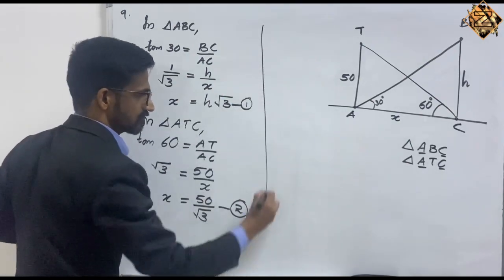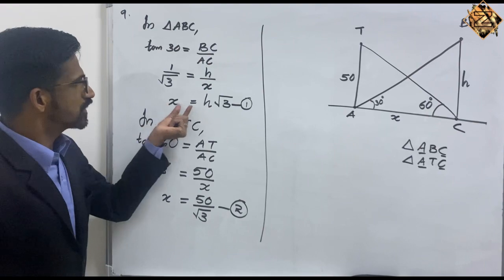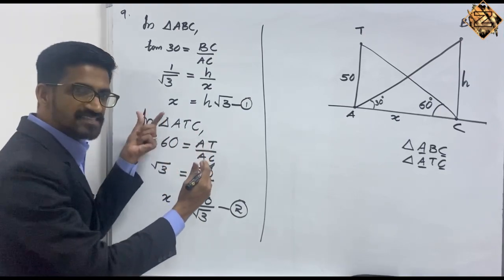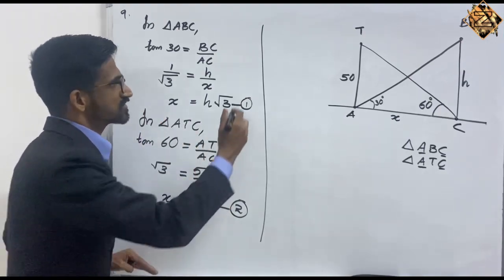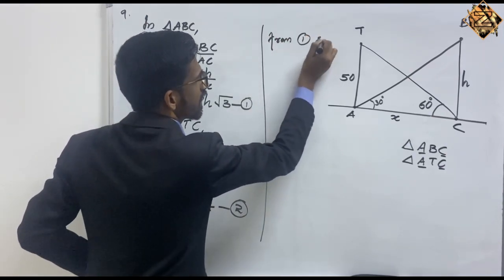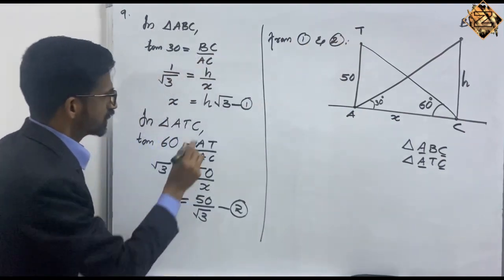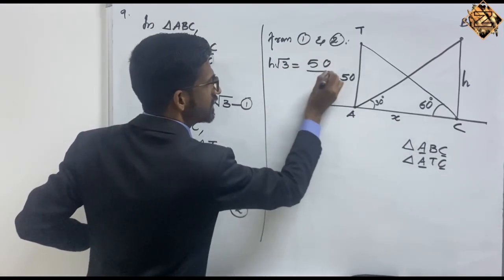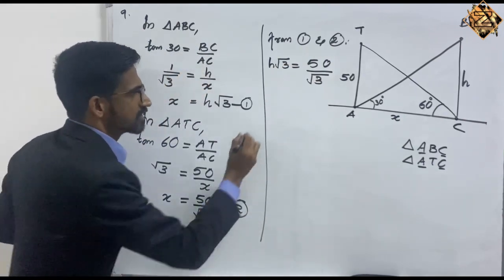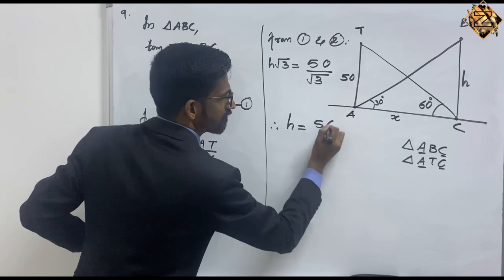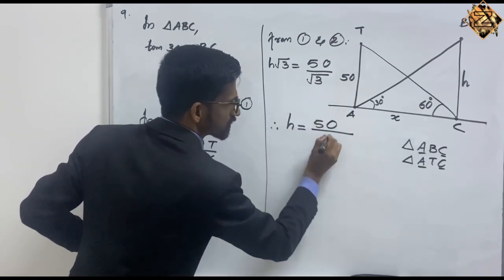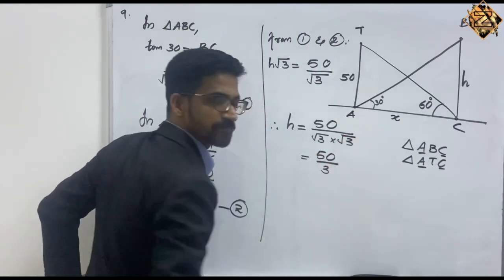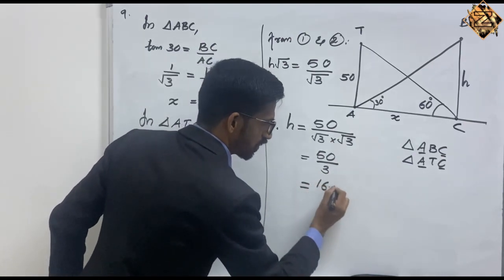We have two equations: equation 1, X equals H root 3, and equation 2, X equals 50 by root 3. Both equations have the same LHS, X, so we equate the RHS. From equations 1 and 2: H root 3 equals 50 by root 3. Therefore, H equals 50 by root 3 into root 3, which gives H equals 50 by 3, that is 16.67 meters.